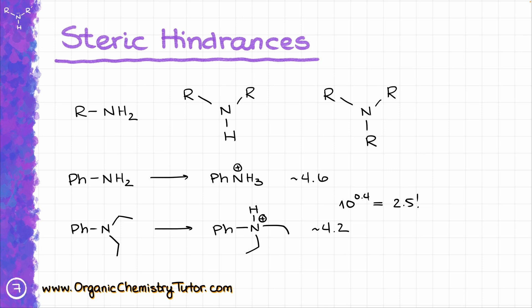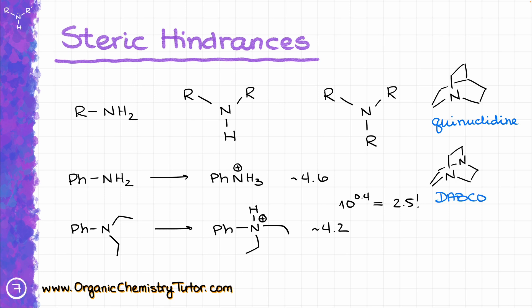The only time a tertiary amine would be more basic than a similarly looking secondary one is when we have a conformationally locked molecule, where the alkyl group physically cannot move around much. Examples include quinuclidine and DABCO (diazabicyclooctane). These compounds are conformationally locked, so the nitrogen at the tip can easily donate its electron pair and act as a base or nucleophile. Because of this locked conformation, these molecules are abnormally basic for their structures.